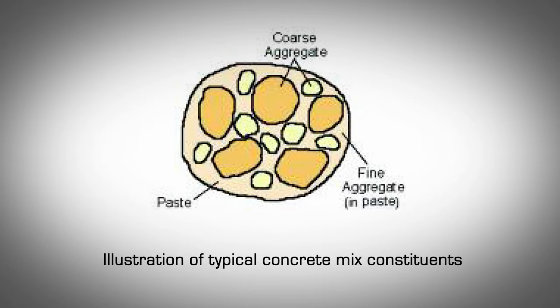Cement paste ordinarily constitutes about 25 to 40 percent of the total volume of concrete. The volume of cement is usually between 7 and 15 percent and the water between 14 and 21 percent. Air content ranges up to about 8 percent of the volume of the concrete.